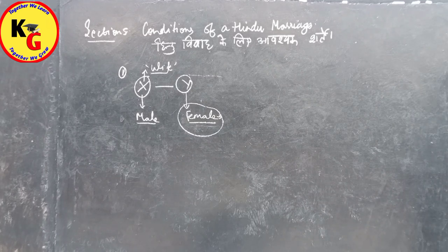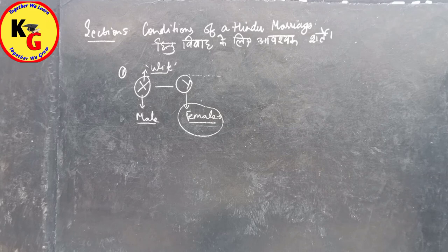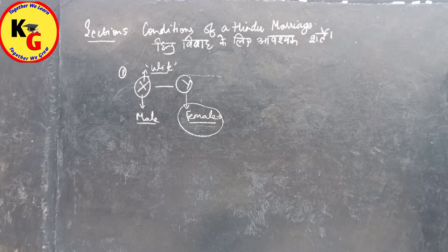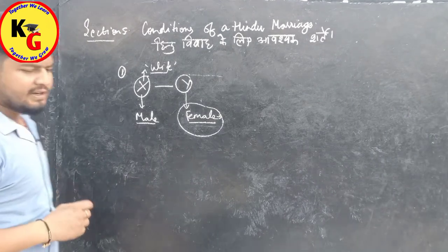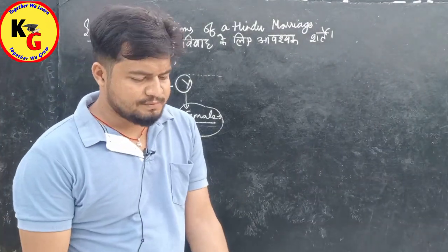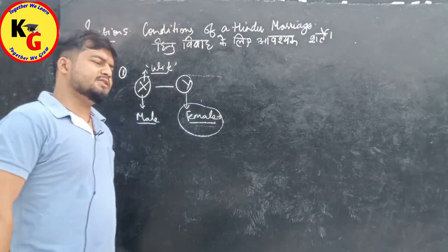So the first condition of Section 5 basically promotes monogamy — it promotes the concept of ekal vivaah (single marriage). Under Hindu Marriage Act 1955, bigamy is essentially a punishable offense. Neither party should have a spouse living at the time of marriage. This is the first condition.